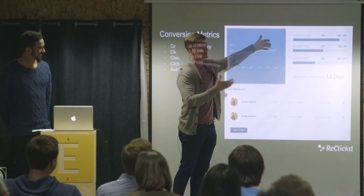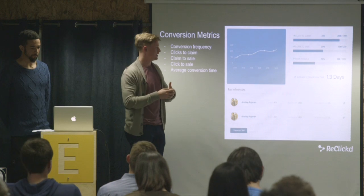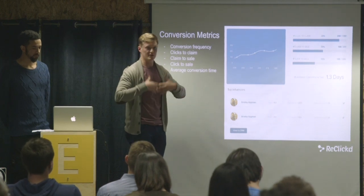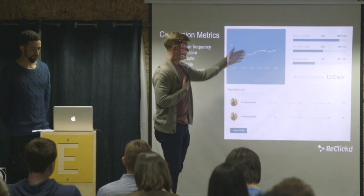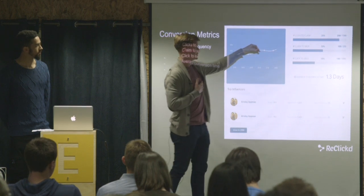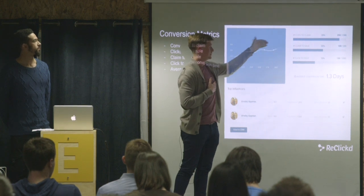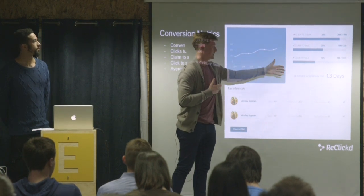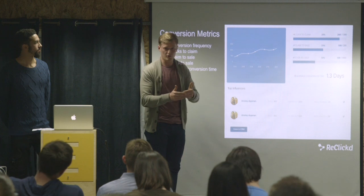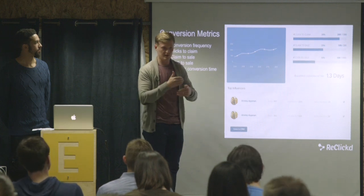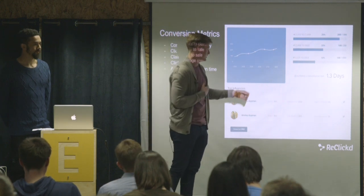This stuff is important as you start to grow your business. Once you've done the integrations with the Stripe product and reached the point where you're launching and putting it into the marketplace, these things become very important — being able to keep everything measurable. So click to claim, claim to sale, and click to sale — these are things you'll start to try to improve at every stage of your business.